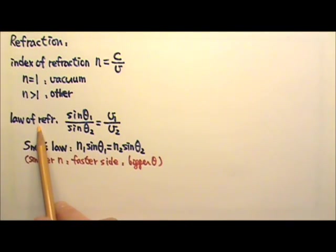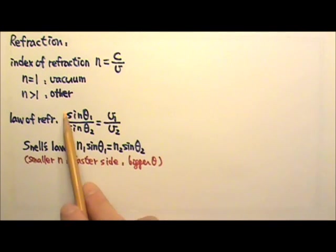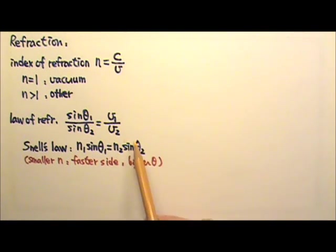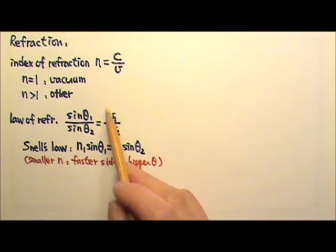The law of refraction is the same as the law of refraction for waves, but for light we usually use Snell's law, which is the equivalent of that: n1 sin θ1 equals n2 sin θ2, just because for light we usually talk about n instead of v.